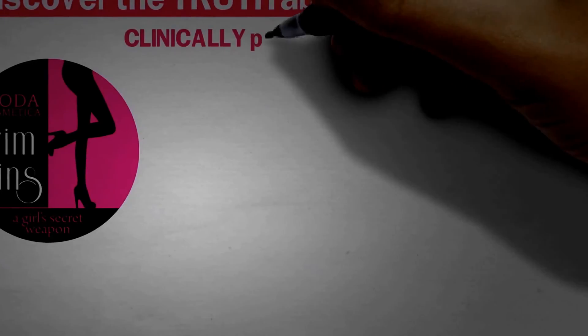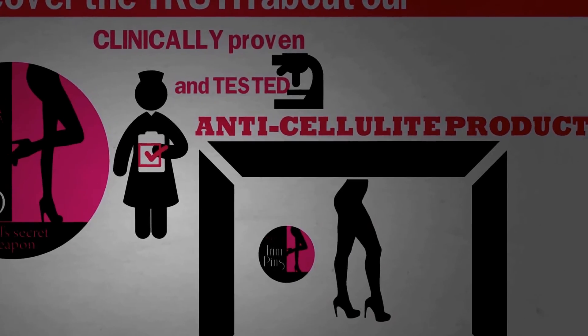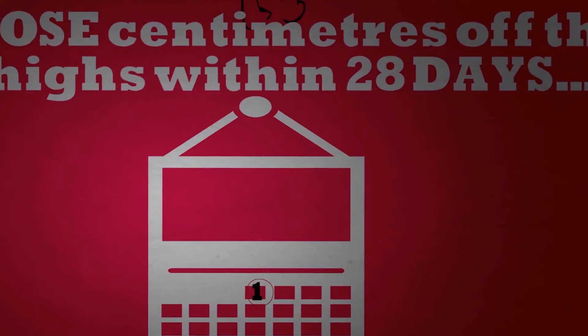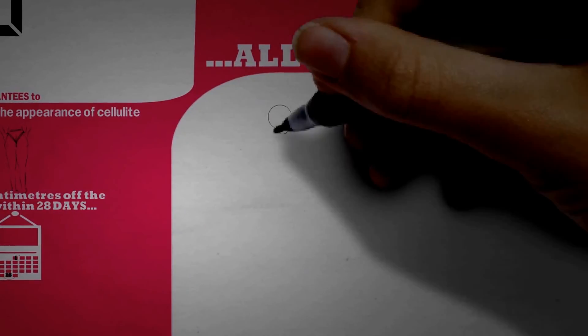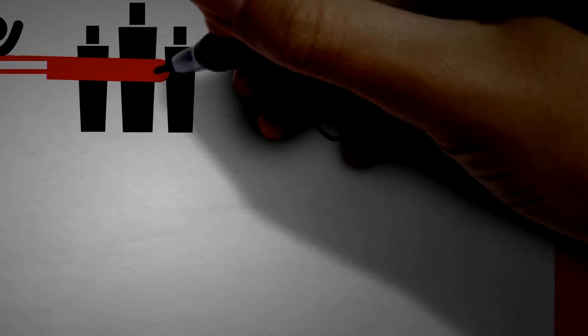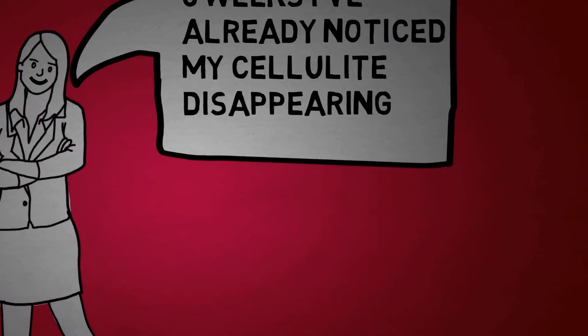Discover the truth about our clinically proven and tested anti-cellulite product which guarantees to remove the appearance of cellulite and lose centimeters off the thighs within 28 days, all without exercising, using expensive creams, moisturizers, or going on a special diet. In less than three weeks, I've already noticed my cellulite disappearing.